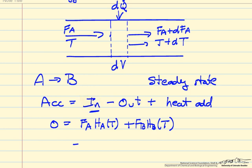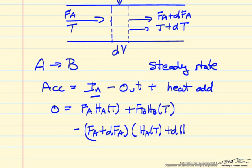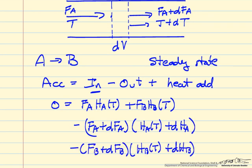We then have flow terms out, where we said flow rate of A has changed, and the enthalpy of A has changed, so let's write this first like so, and then I wrote the same term for B, and then we have the energy added by heat transfer.